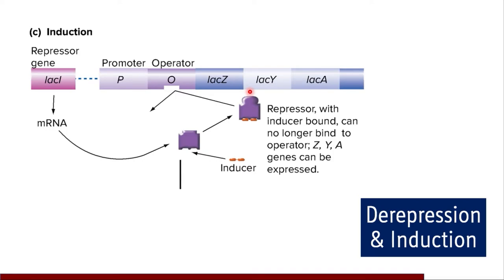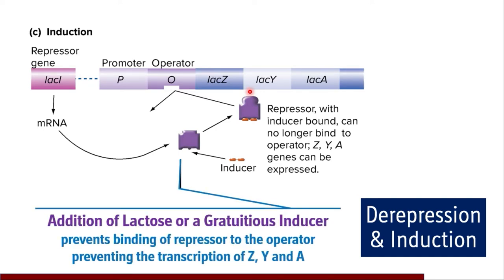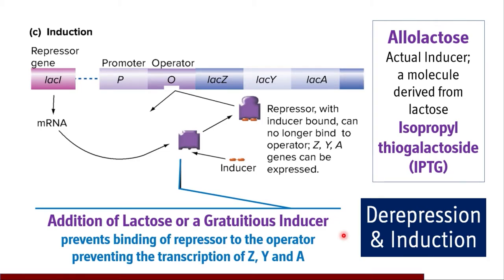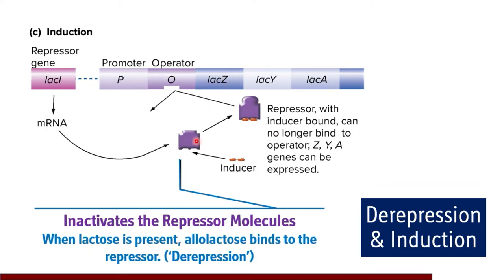Addition of lactose or a gratuitous inducer results in derepression and induction of the lac operon. Isopropyl thiogalactoside (IPTG), a structural analog of lactose, differs from lactose in that it cannot be hydrolyzed by beta-galactosidase — such analogs are called gratuitous inducers. Although early experimenters thought lactose was the inducer, it is now proven that allolactose, a molecule derived from lactose, is the actual inducer. Two inducers are thus recognized: allolactose and IPTG.